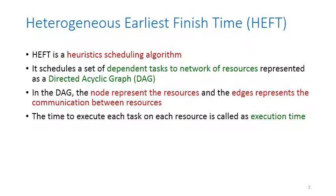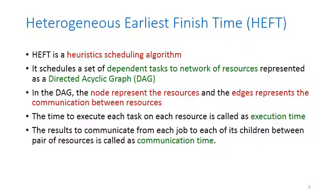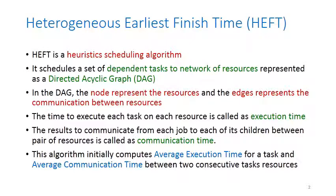The time taken to communicate the temporary result is called communication time. The time to execute each task on each resource is called execution time, and the result communicated from each job to each of its children between a pair of resources is also called communication time. The algorithm initially computes average execution time for each task and average communication time between two consecutive resources.